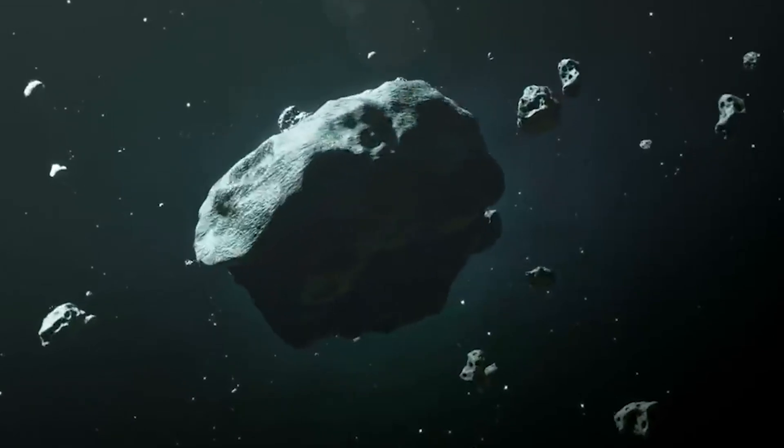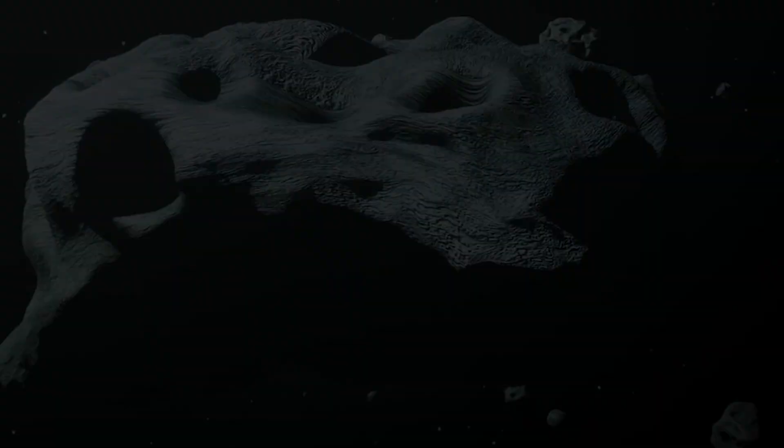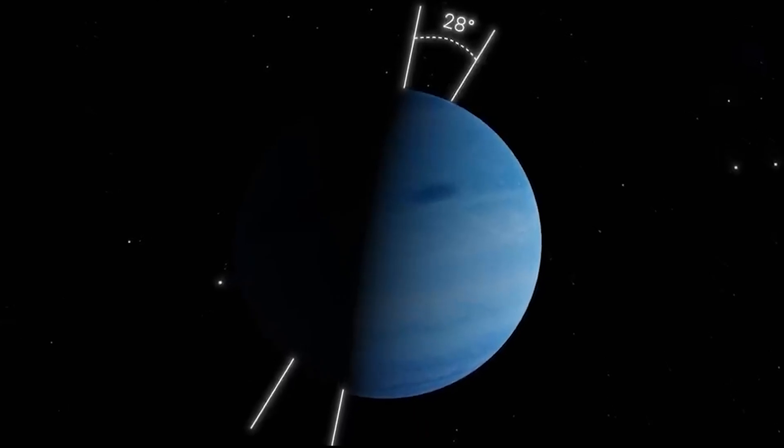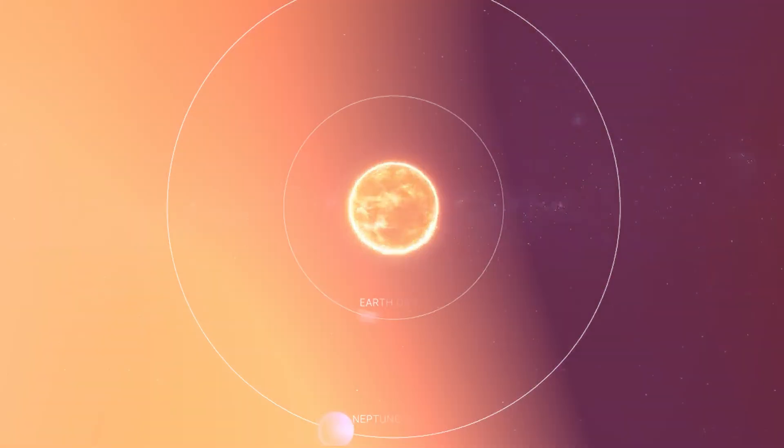Despite being cold on the surface, Neptune generates an unusual amount of internal heat. Scientists believe this heat could come from a combination of gravitational compression and interactions with its largest moon, Triton.